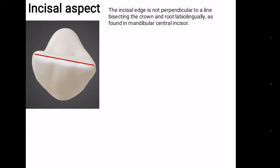The incisal edge is not perpendicular to the line bisecting the crown and root labiolingually, which is not seen in central incisor. The edge follows the curvature of the dental arch due to which it appears to be twisted.